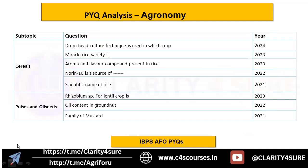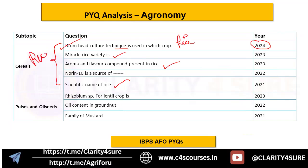For cereals, a 2024 out-of-the-box question asked: drumhead culture technique is used in which crop — the answer is rice. Other rice questions covered the miracle variety of rice, the aroma and flavor compound present in rice, and the scientific name of rice. A question on Norin 10 was also asked, which relates to wheat. Rice and wheat are the focal points for cereals, so you need to know everything about both crops.